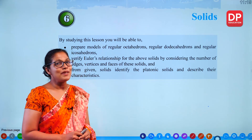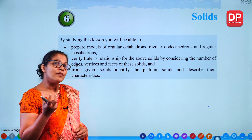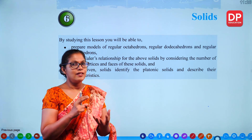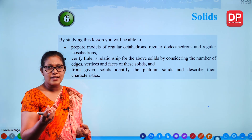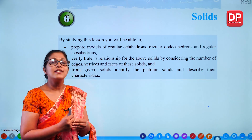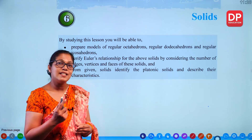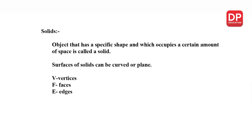Hello Grade 8 children. Today I'm here to teach you Chapter 6 in your textbook — that's solids. So what are solids? Take a stone — that's a solid. 3D figures like a cuboid, a brick, a die — those are solids. You get different shapes. In this lesson we'll discuss certain types of solids. An object that has a specific shape and which occupies a certain amount of space is called a solid.